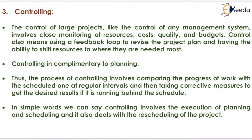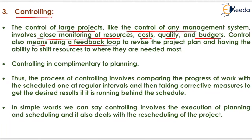The next process is controlling. The control of large projects, like the control of any management system, involves close monitoring of resources, cost, quality, and budgets. Control also means using a feedback loop to revise the project plan and having the ability to shift resources to where they are needed most.